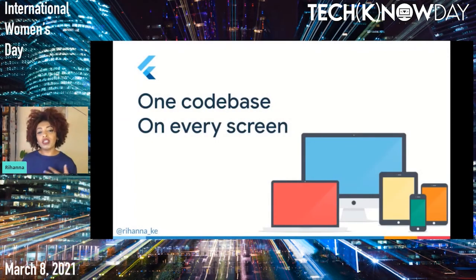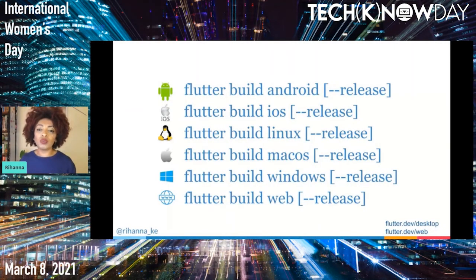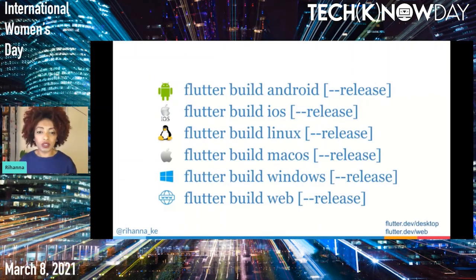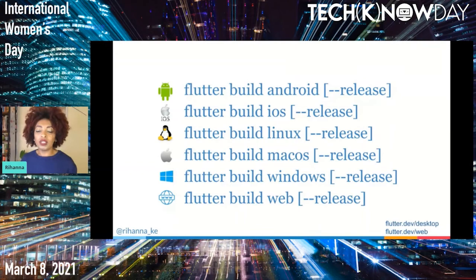The roadmap of Flutter is to run the same codebase on every screen and platform. The idea is to develop once and compile to a native app for different platforms with a single command line, or almost. Not yet there for all platforms, but it is in active development. Flutter has been stable since December 2019 for mobile and now counts over 90,000 apps on the Google Play Store. For the status of other platforms, check out flutter.dev, flutter.dev/desktop, or flutter.dev/web.